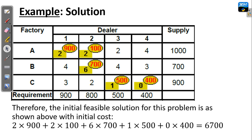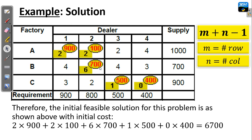We are going to start from here to check if this initial feasible solution is optimal or not. The method we are going to apply is the stepping stone method. The stepping stone method normally requires that the number of allocations be equal to m plus n minus 1, where m is the number of rows and n is the number of columns. We have 5 allocations and the number of rows are 3, number of columns are 4. So m plus n minus 1 gives us 6, while we have 5 allocations. This situation means our transportation problem is degenerate.